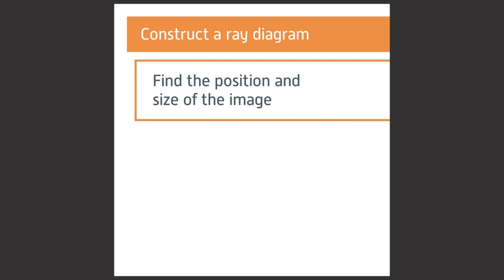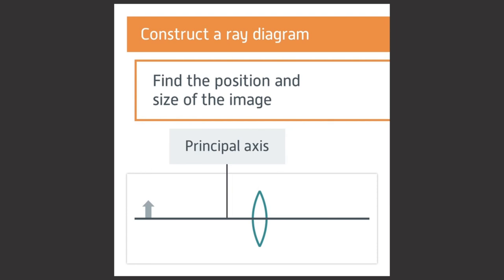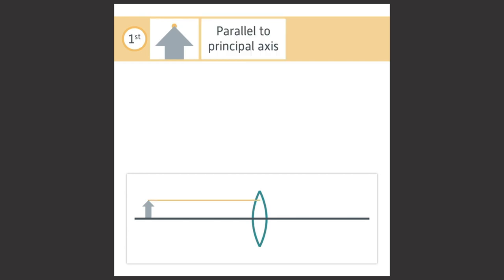The diagram shows the lens and the object on the left. We can draw a horizontal line from the base of the object through the center of the lens — this is known as the principal axis. The first light ray travels from the tip of the object parallel to the principal axis until it enters the lens.